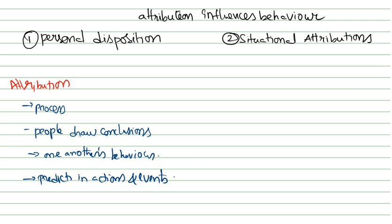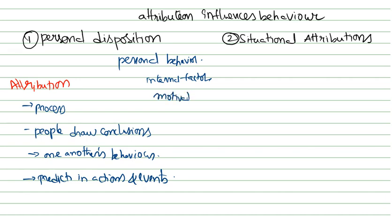There are two types of attributions: one is personal disposition and second is situational attributions. Under personal disposition, it relates personal behavior to internal factors — it is purely related with a person's personal behavior, which relates to internal factors such as personal motivations and a person's ability. That is what personal disposition is.